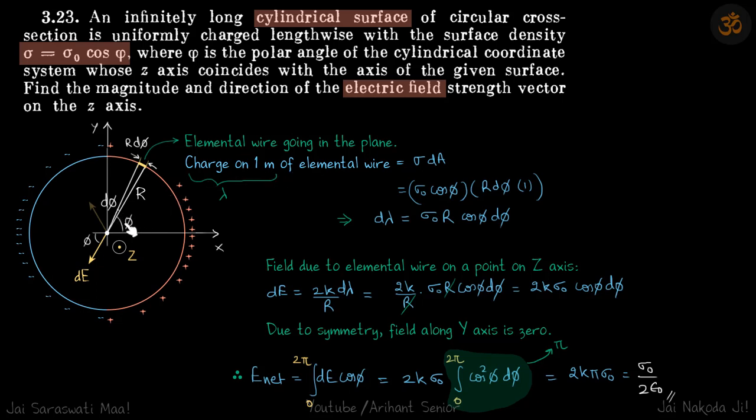Charge on one meter of this wire: at an angle phi we are given sigma is sigma naught cos phi. We will take one meter of this wire and thickness of this wire is R d phi. So area of that wire will be R d phi into one meter. So charge on one meter will be sigma dA. Sigma is sigma naught cos phi and dA is R d phi into one. And charge on one meter is nothing but lambda of this wire, this elemental wire.